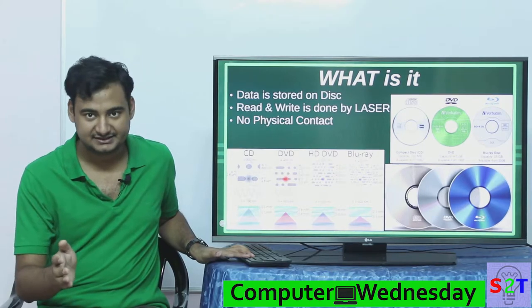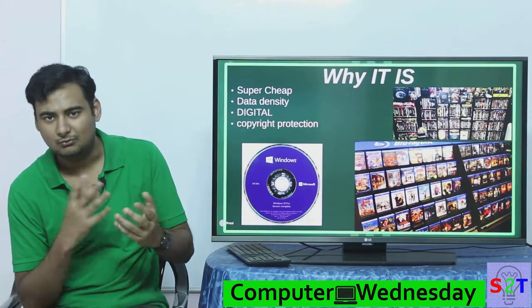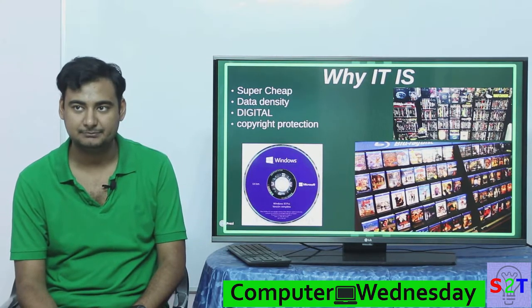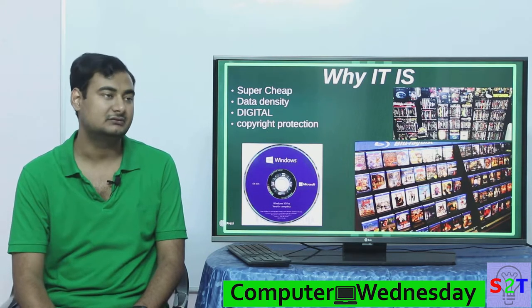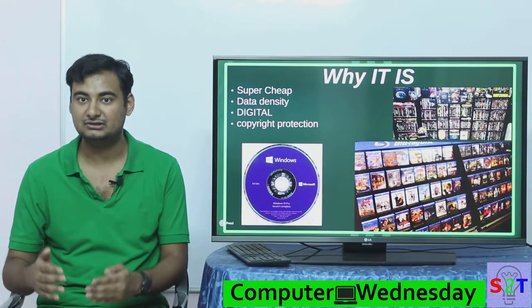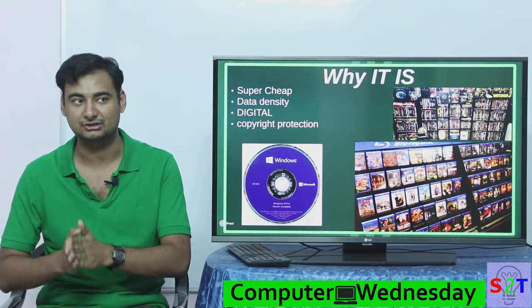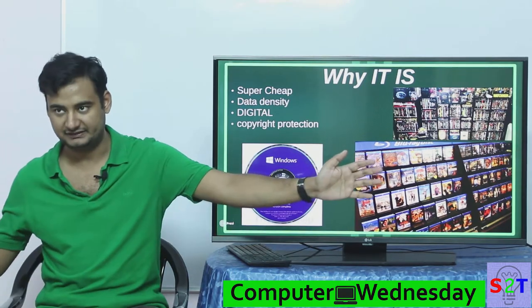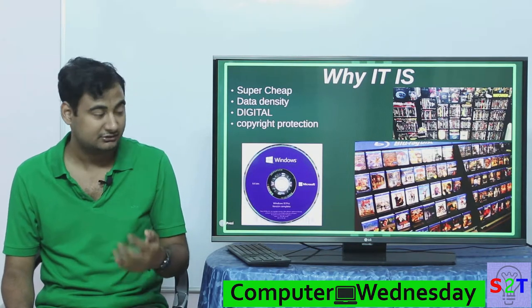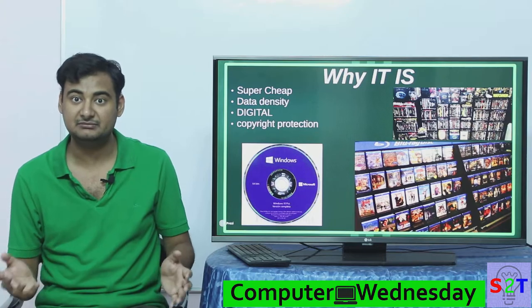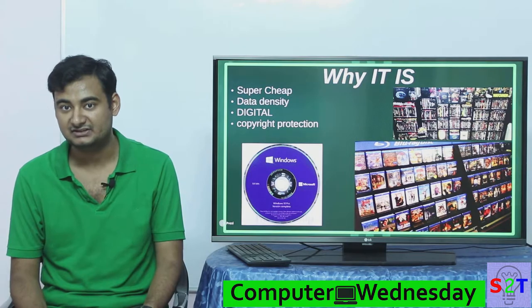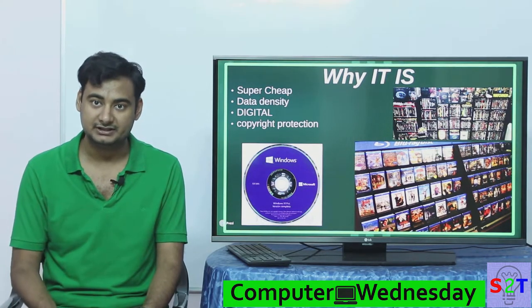So this is what optical disk is — no physical contact, using laser to read and write data. Why is it so popular? First, it's super cheap. Try to buy a 25 GB USB — it's expensive. Even today if you want bulk storage, like a recording studio buying millions of discs to ship to customers, you can't do that on a pen drive. The whole reason Microsoft and Bill Gates became as rich as they did is partly because of this.